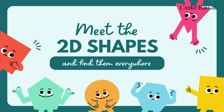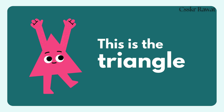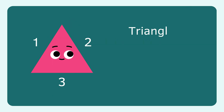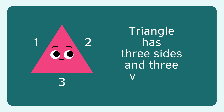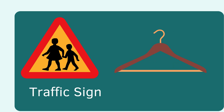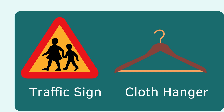2D shapes. Triangle. Triangle has three sides and three vertices. Examples include a traffic sign and a cloth hanger.